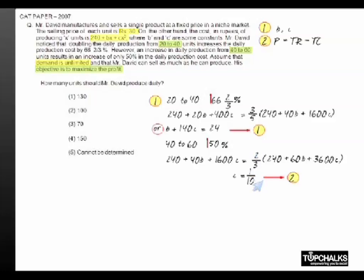Applying equations one and two, we get B = 10 and C = 1/10. So the total cost function is 240 + 10x + x²/10.